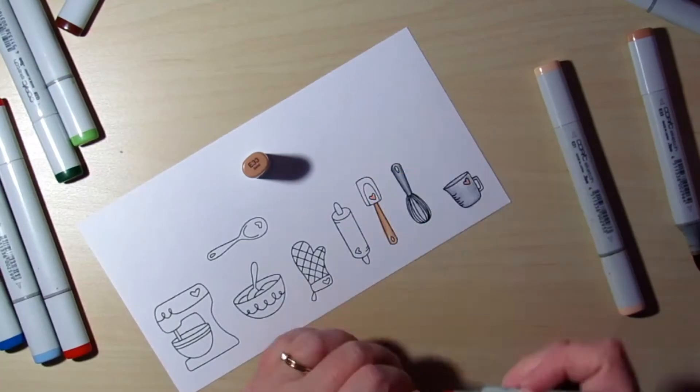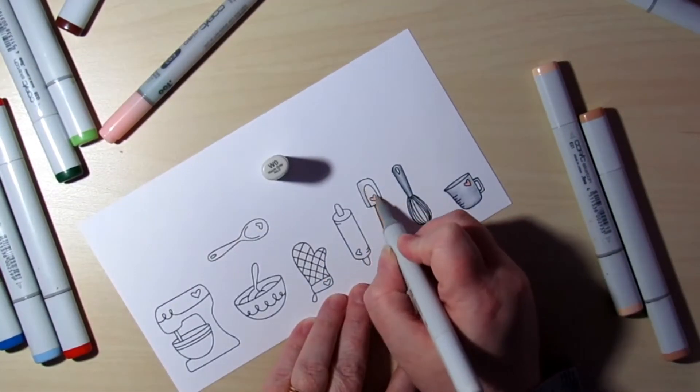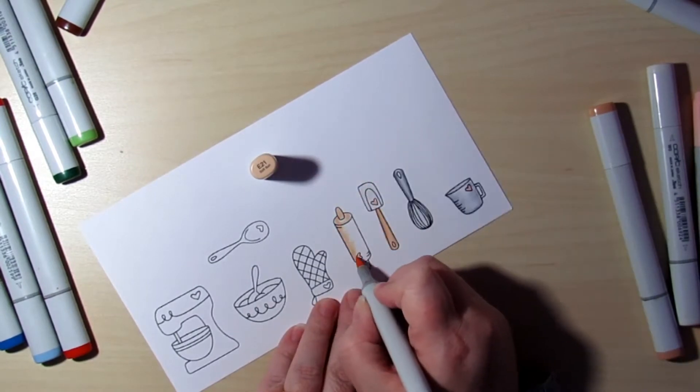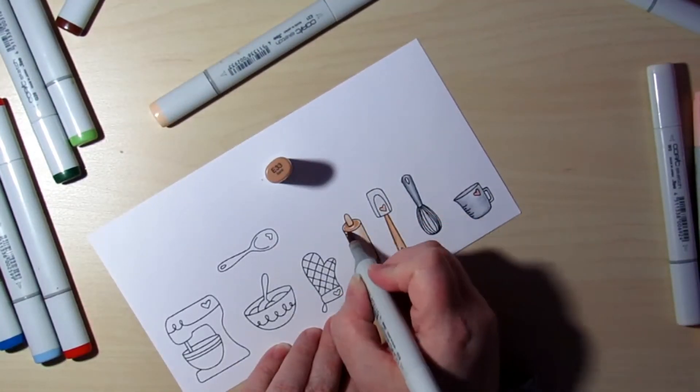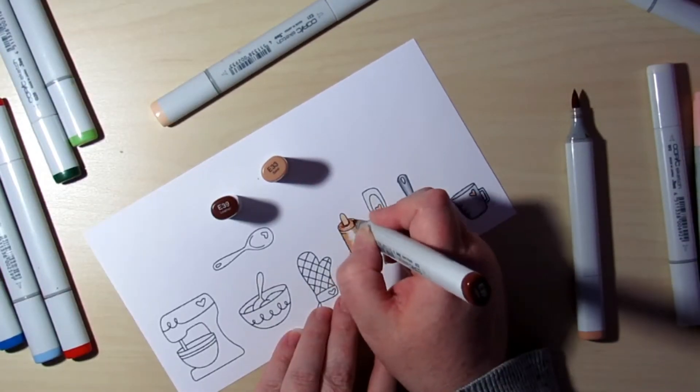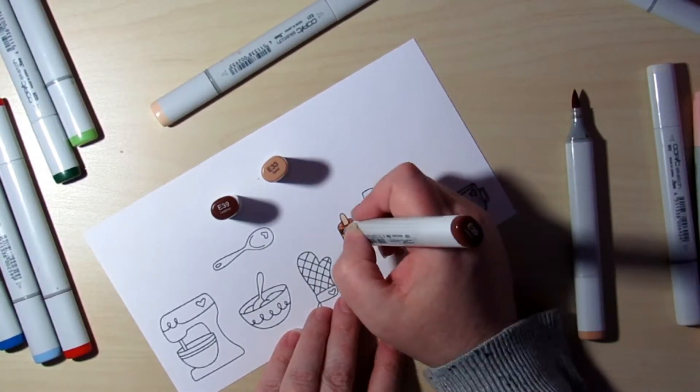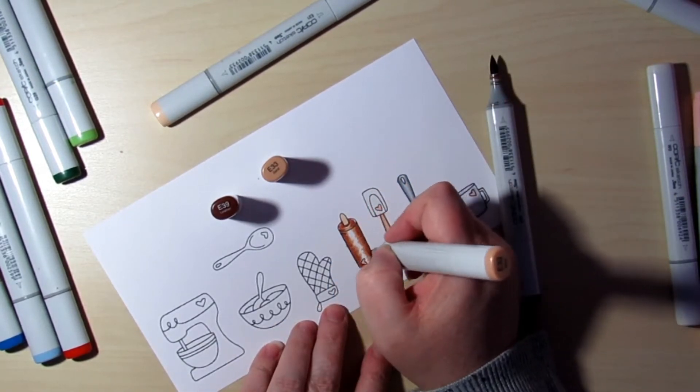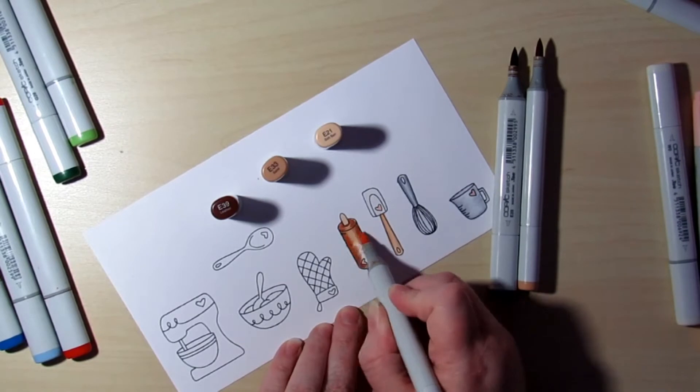So kind of towards the end you'll start to see me being really messy when I realize why in the world am I being so neat on the edges. I am going to fussy cut these. So for the browns I'm using an E21, E33, and E39. And again those brown colors will carry out throughout the other images as well.